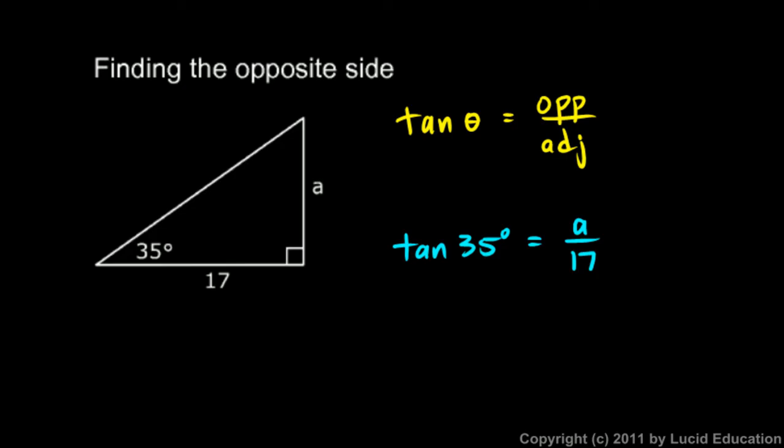We can solve this for a. You should be able to do this mentally, but I'll write it. Multiply both sides by 17, and the 17s cancel. We're left with a equals 17 times the tangent of 35 degrees. You should be able to go from the original equation to this mentally.